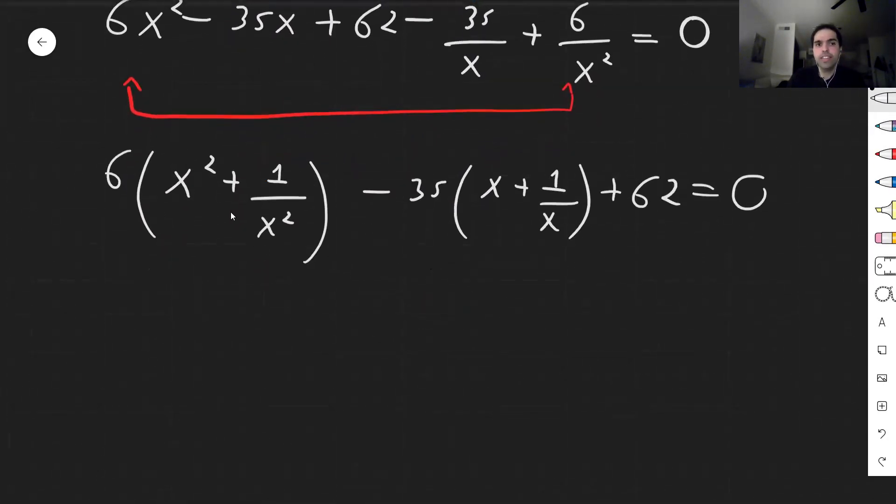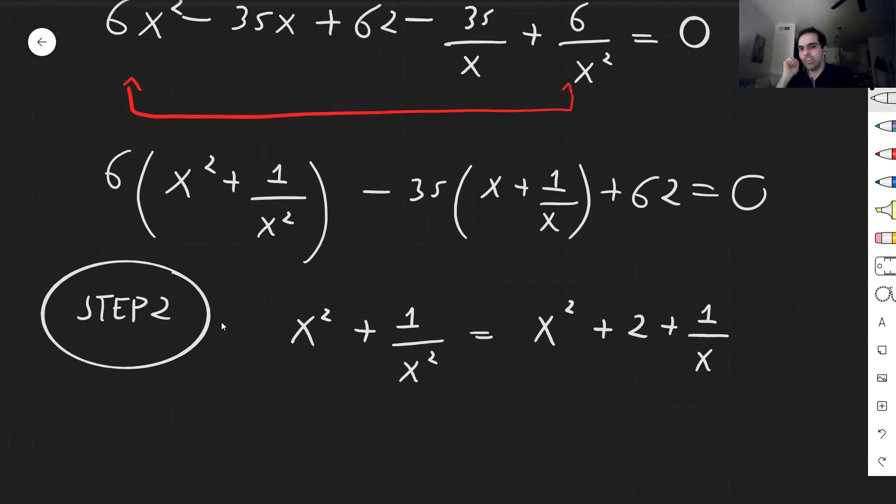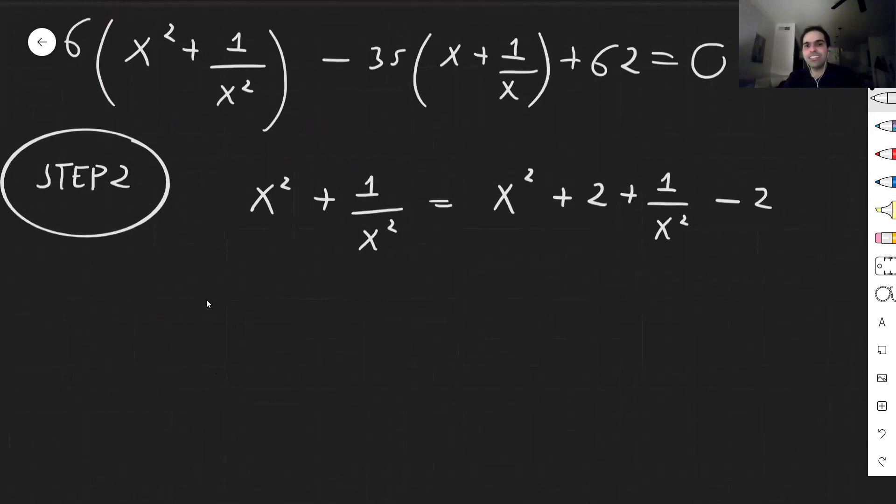So now step two, this term actually simplifies. Because notice the following. So x squared plus 1 over x squared. What we would like to do is somehow complete this square. So notice you can write this as x squared plus 2 plus 1 over x squared minus 2. So just adding and subtracting 2. But the nice thing is this actually becomes a square.